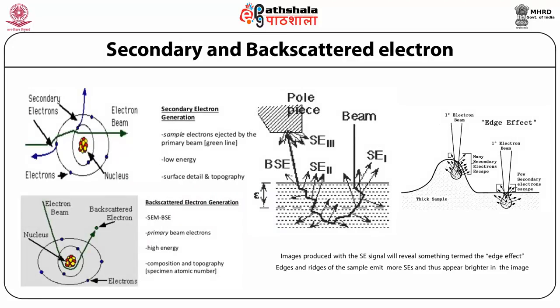In this slide we discuss about secondary and backscattered electrons and how they form. When the incident beam enters the specimen, secondary electrons are produced from the emission of valence electrons of constituent atoms in the specimen. Since the energy of secondary electrons is very small, those generated at deep regions are quickly absorbed by the specimen. Only those generated at the top surface are emitted outside. This means secondary electrons are very sensitive to the surface. The difference in brightness of the crystal surface is due to the difference in the incident angle of the electron beam. Thus, secondary electrons are used to observe the topography of the specimen surface.